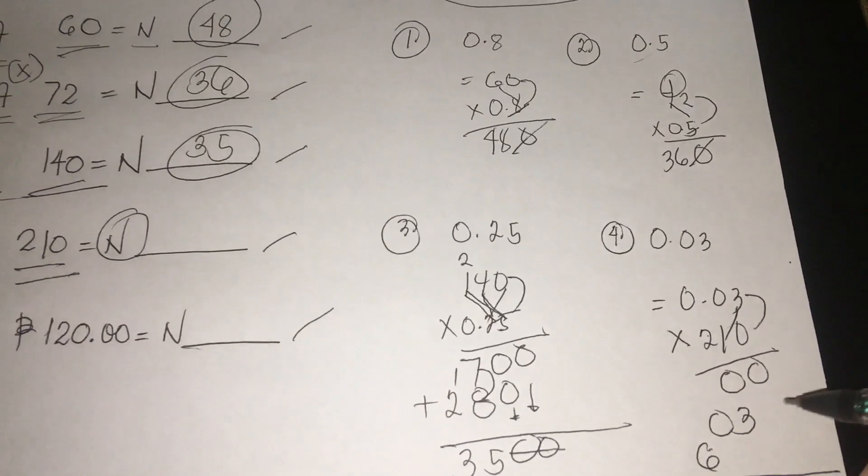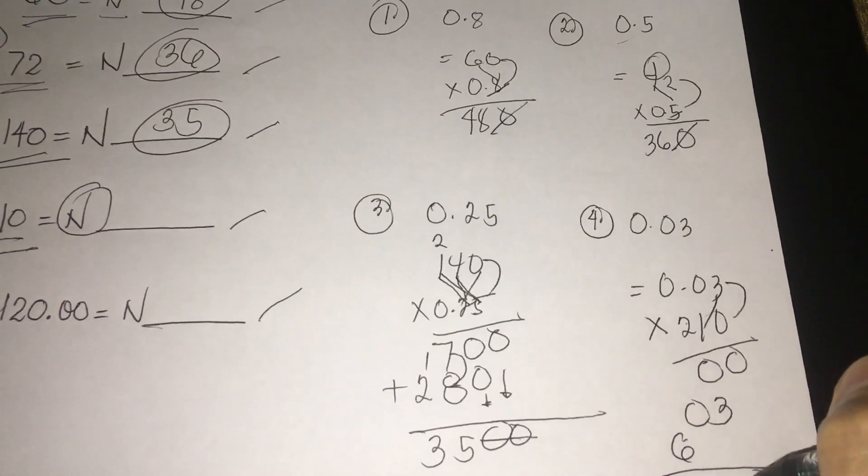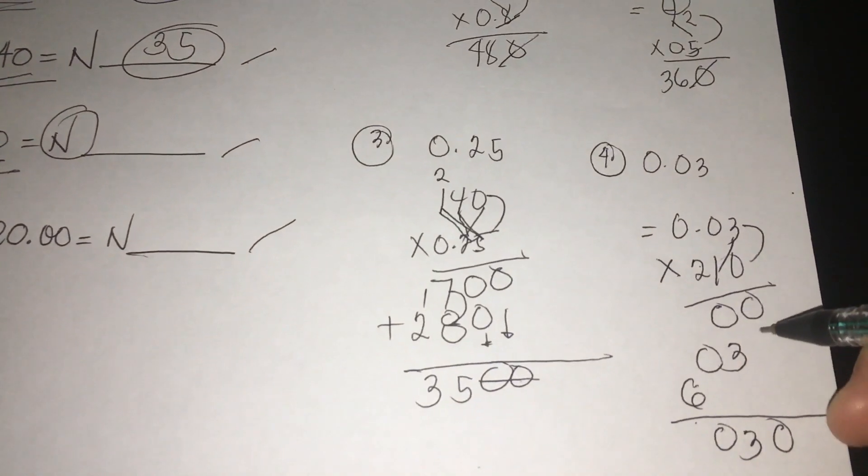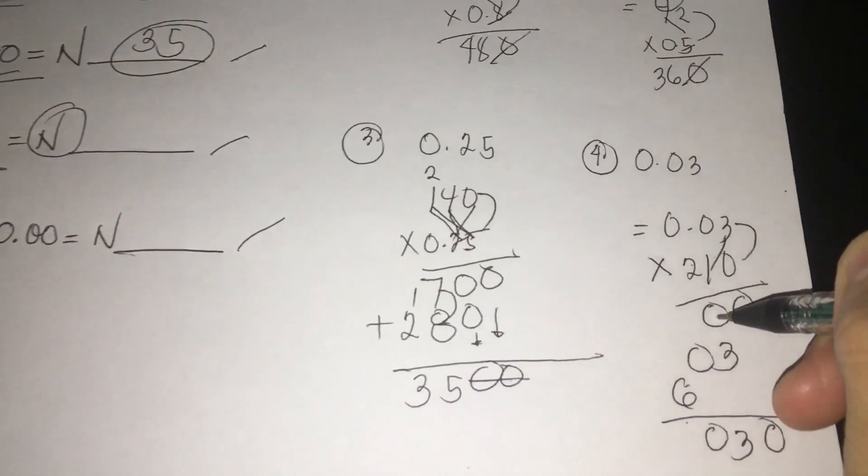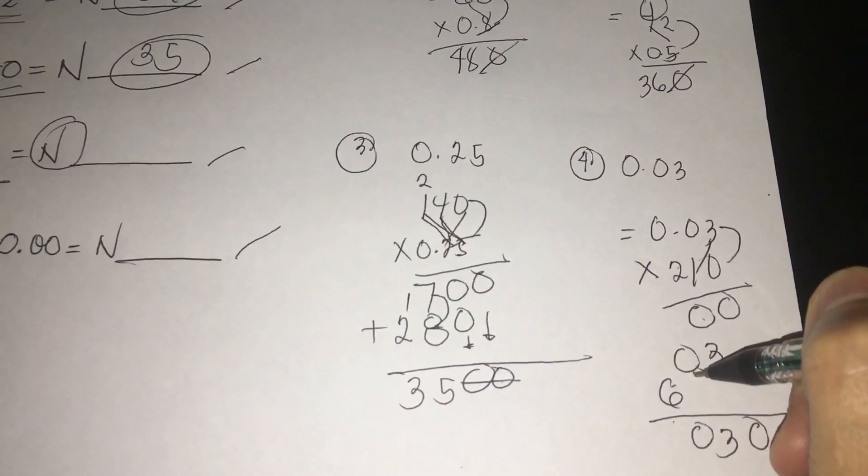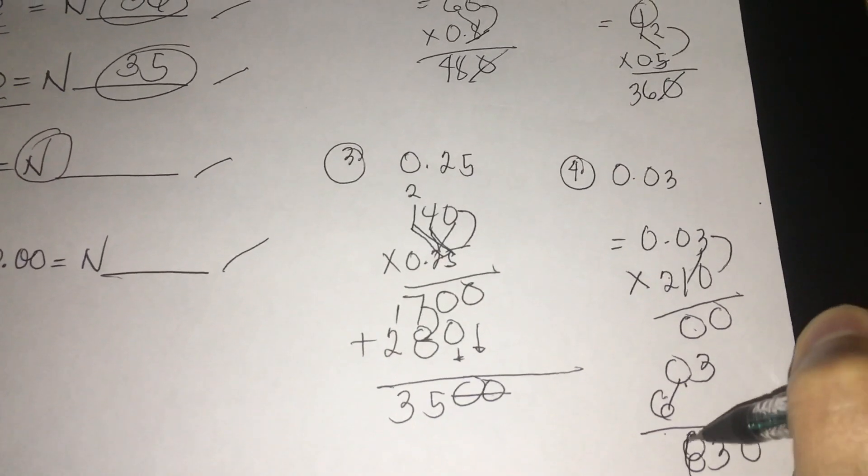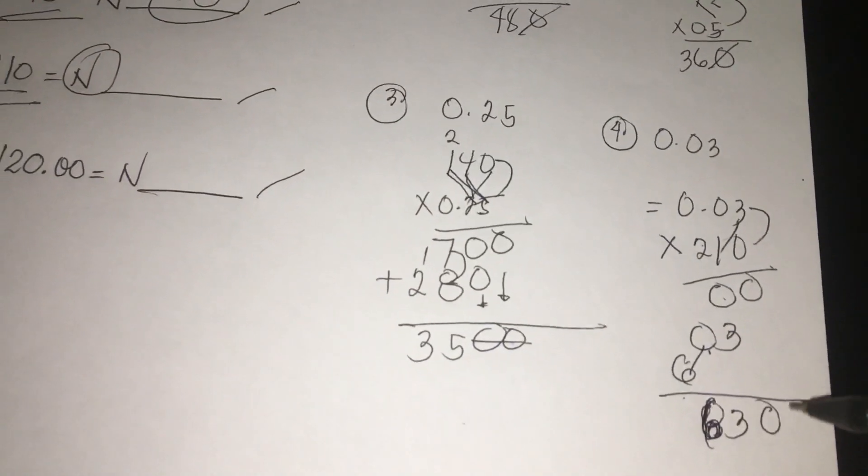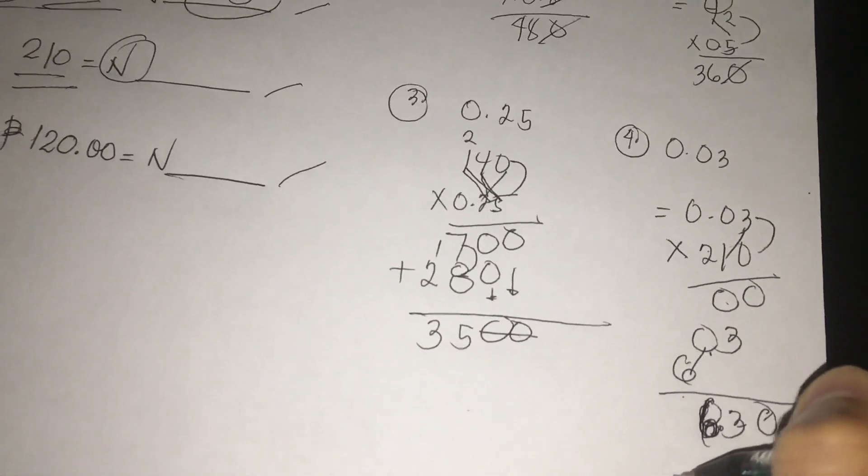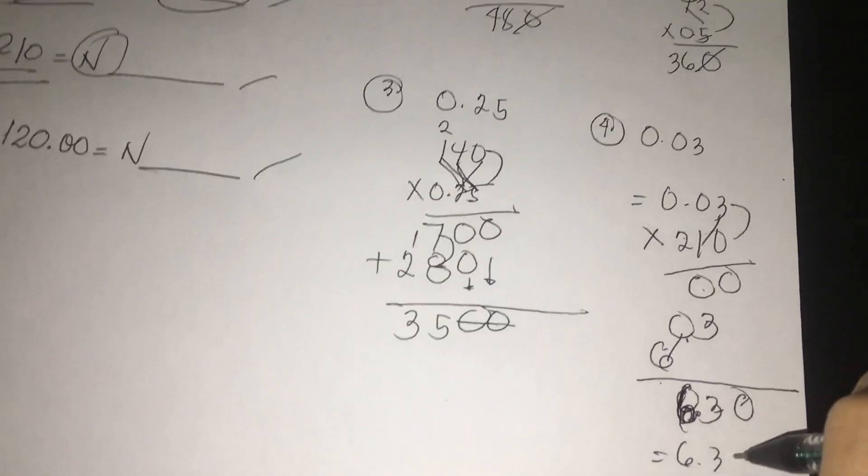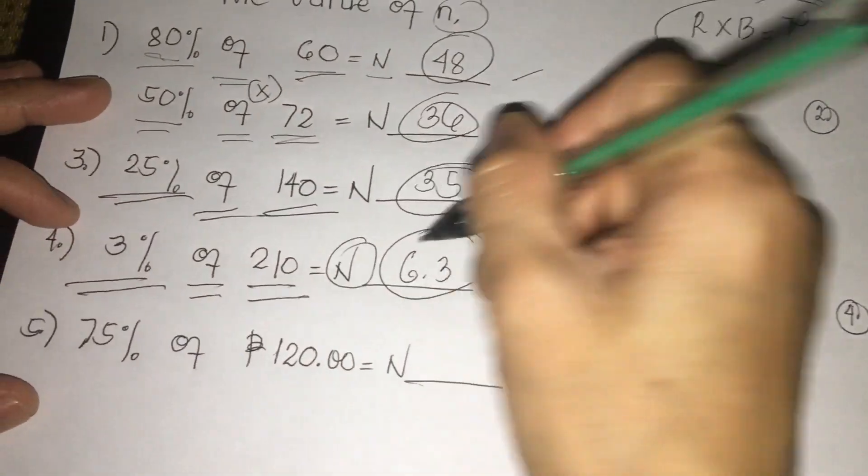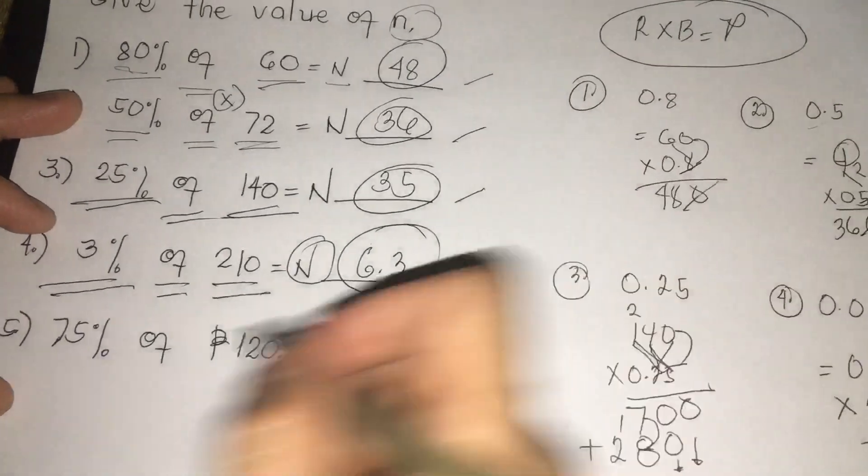So 1, 2, 1, 2. So 6.30 or 6.3 is our answer for 3% of 210.